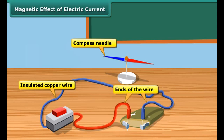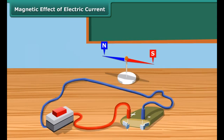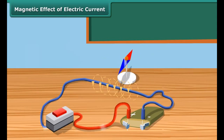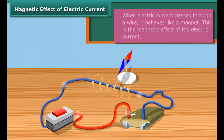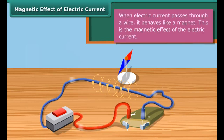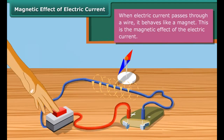When no current is flowing, the magnetic needle is parallel to the wire and points in the usual north-south direction. The needle gets deflected from its north-south position when current is passed through the wire. When the electric current is switched off, the needle returns to its original position. This shows that an electric current produces a magnetic field around it.